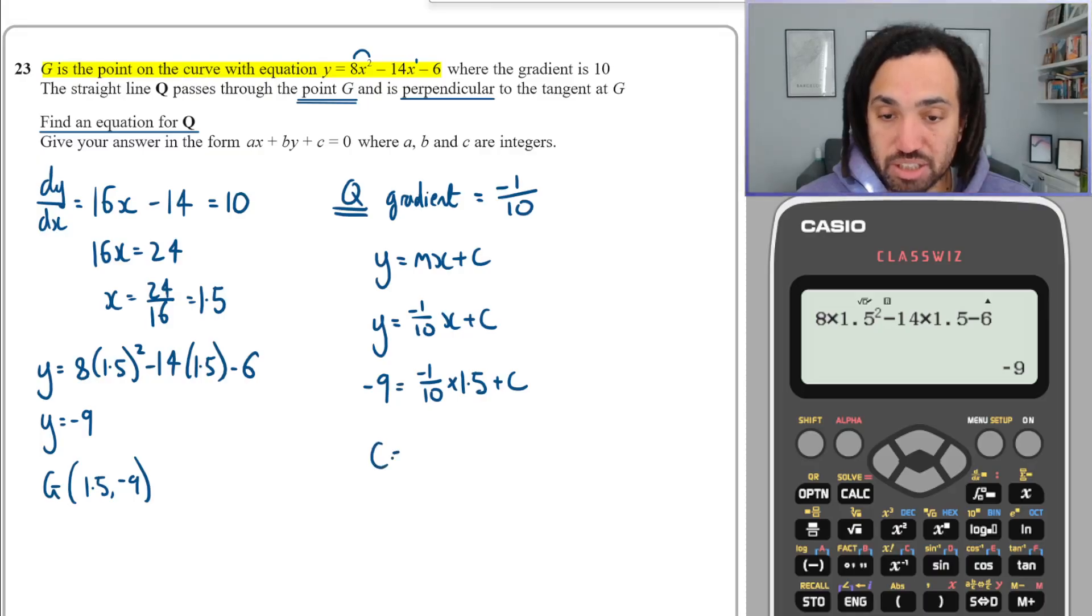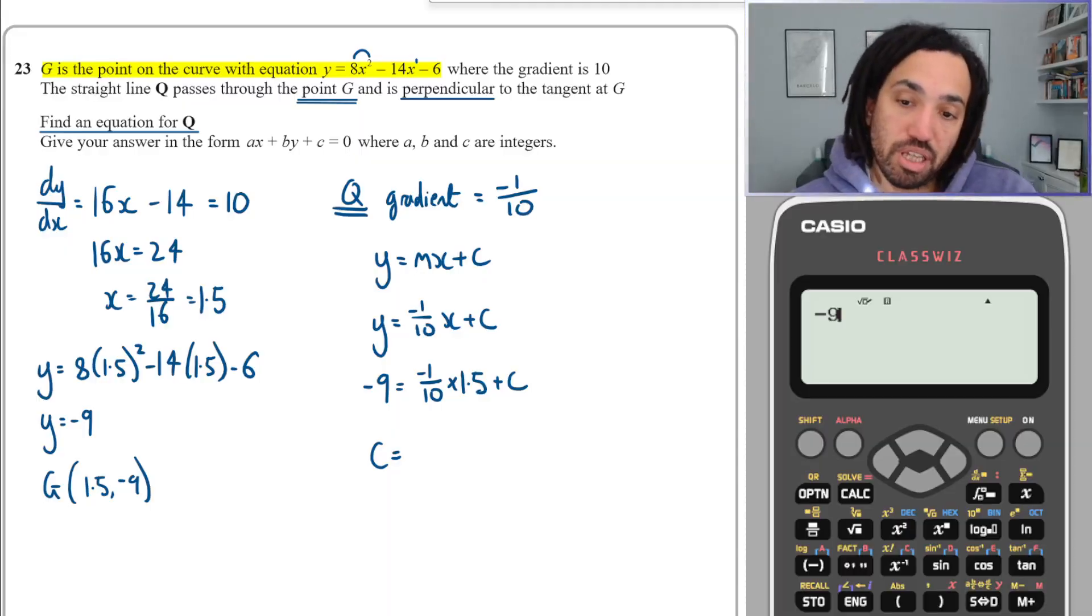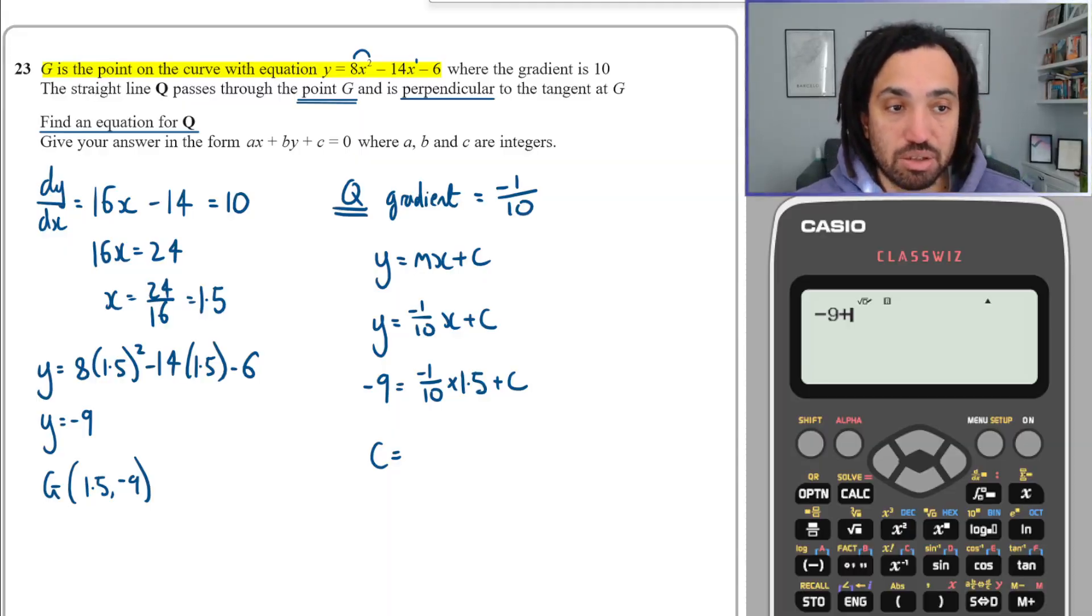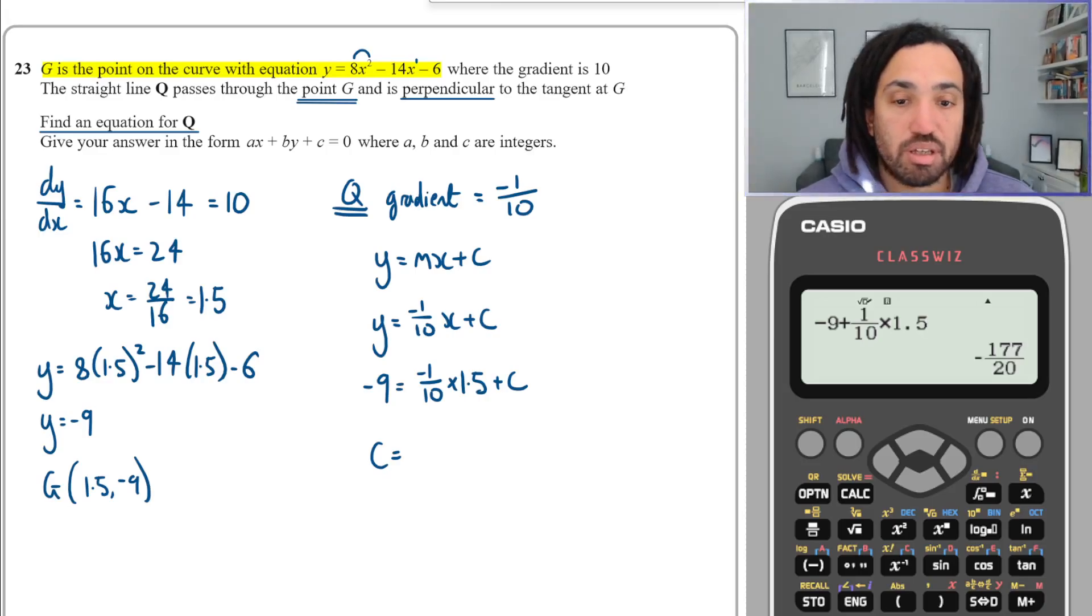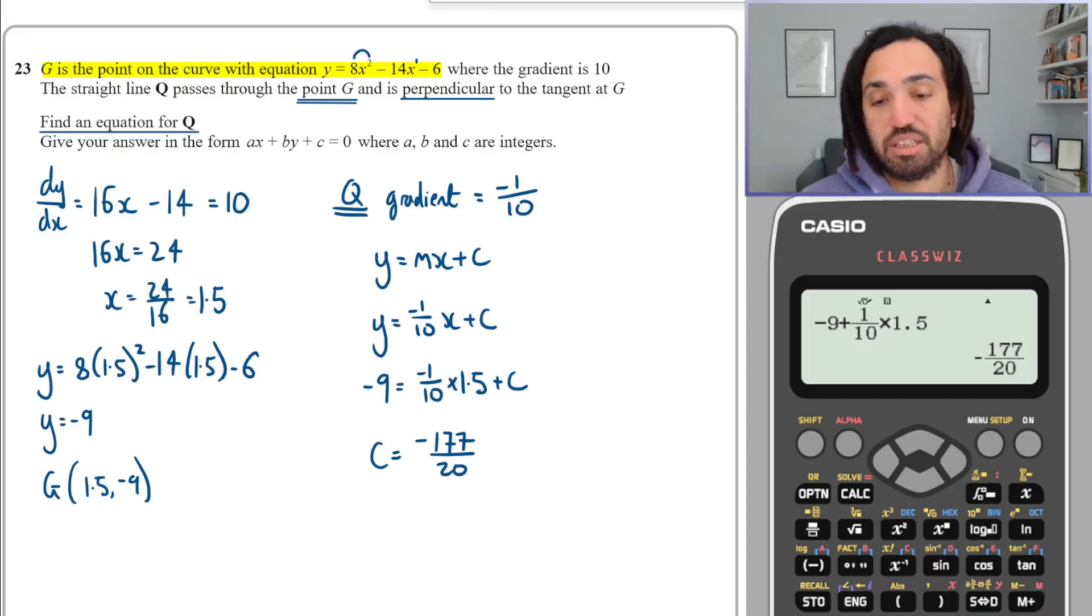Therefore we can work out what c is. So I would do -9, and then we move the other one to the other side, so I add on one-tenth multiplied by 1.5.